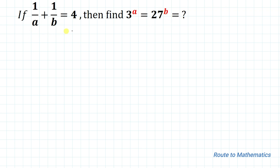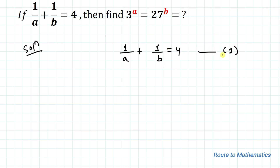So here we have given an equation and we are asked to find the value of 3 to the power a equals 27 to the power b equals how much. So without any delay let's start the solution. We have given 1/a + 1/b = 4, and we have also given 3 to the power a equals 27 to the power b.